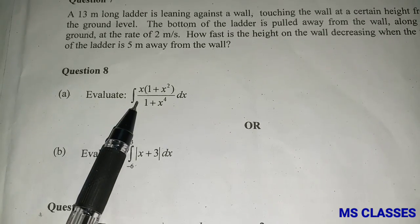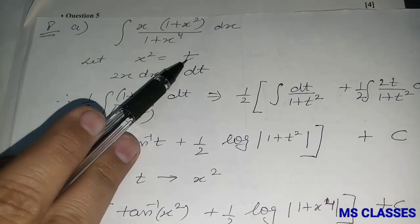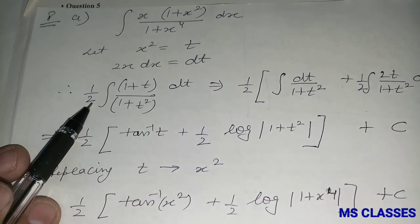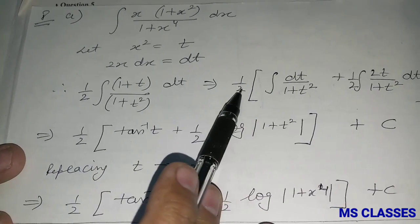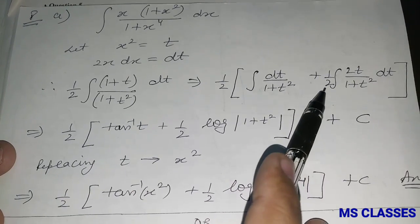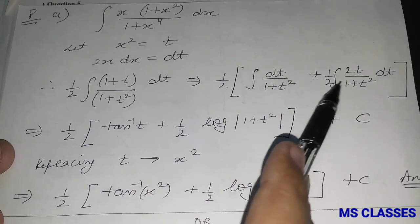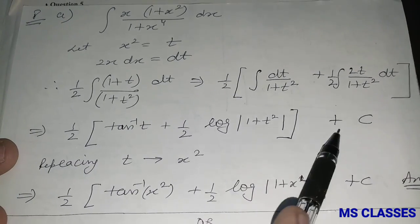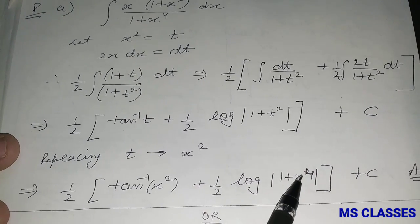Next: evaluate ∫ x(1 + x²)/(1 + x⁴) dx. Assume x² = t, so 2x dx = dt, i.e., x dx = dt/2. The integral becomes (1/2)∫(1 + t)/(1 + t²) dt. Splitting: (1/2)∫ dt/(1 + t²) + (1/2)∫ t dt/(1 + t²). The first gives (1/2)tan⁻¹t; for the second, substituting gives (1/4)log|1 + t²|. Replacing t = x²: answer is (1/2)tan⁻¹(x²) + (1/4)log(1 + x⁴) + C.